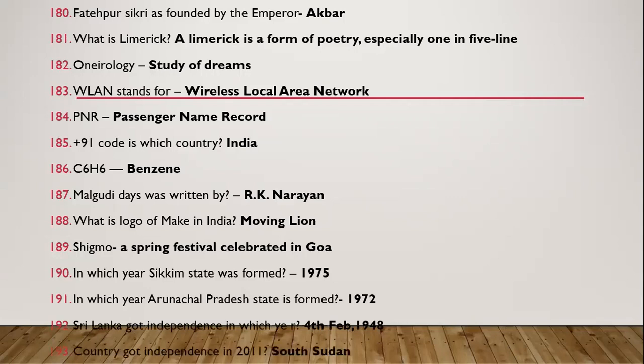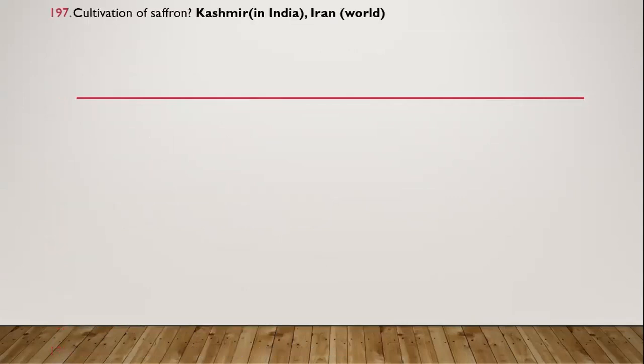Question 188: Which country got independence in 2011? It was South Sudan. Question 189: Cultivation of saffron in India — it is in Kashmir.